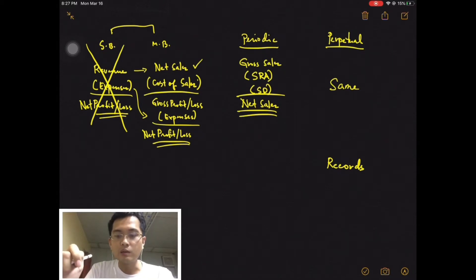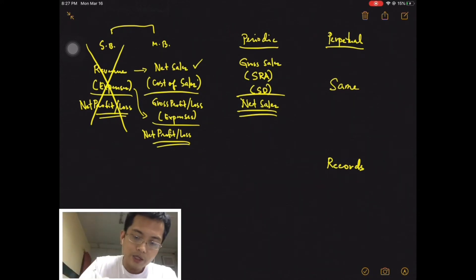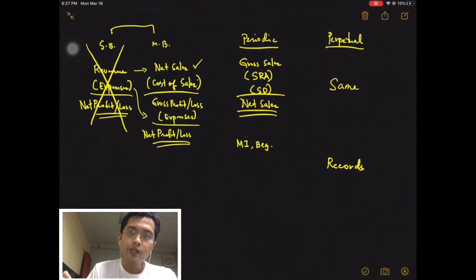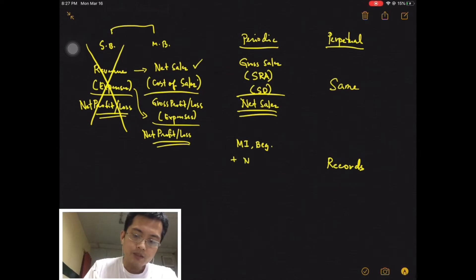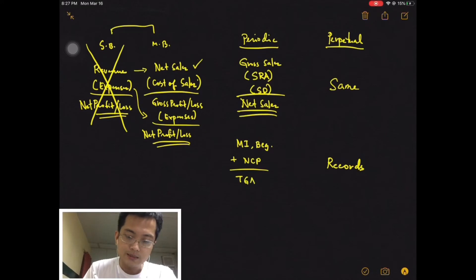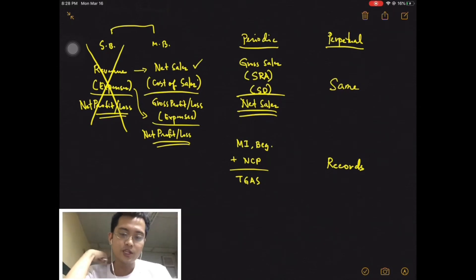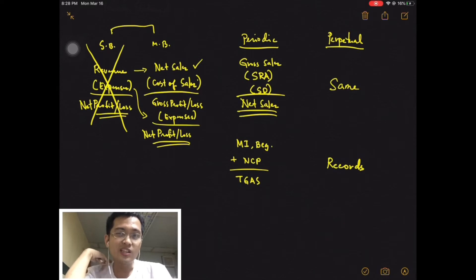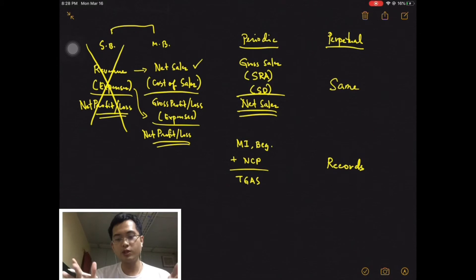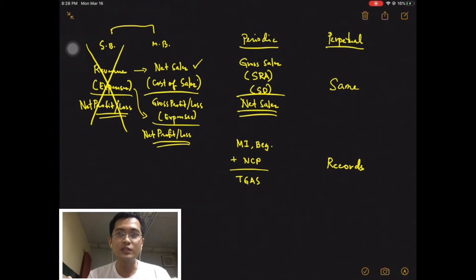So how do we compute cost of sales under periodic? You need the beginning inventory — merchandise inventory at the beginning of the year. Then you add NCP, net cost of purchases, to get your TIGAS, total goods available for sale. Merchandise inventory beginning is what you have on January 1, and net cost of purchases is your purchases during the year. If you add both — what you have on January 1 and what you purchase during the year — you will get total goods available for sale. This makes sense, because what you have at the beginning and what you purchase would be the goods available for sale.